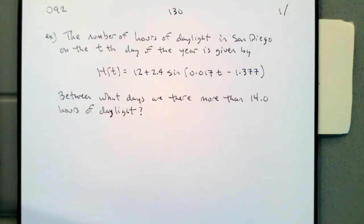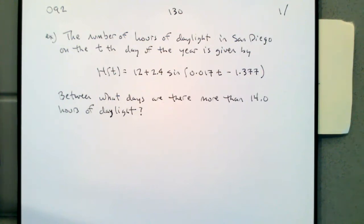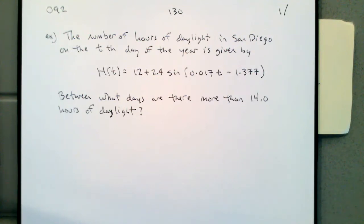This is a slightly different format. Normally we have B multiplied by the difference (T minus the horizontal shift), but here it looks like we've distributed the B. So we have a linear function inside the sine. That changes our order of operations analysis: first multiply by B, then subtract what is presumably B times C, then take sine, then multiply by 2.4, then add 12.